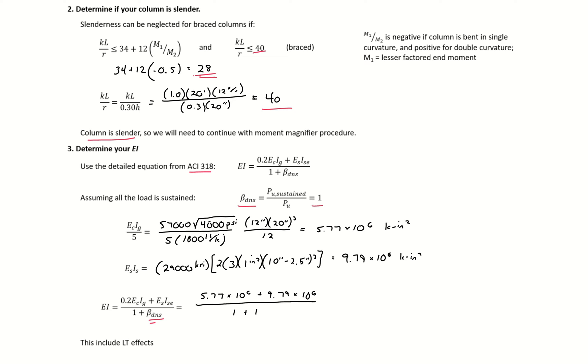This gives us EI equal to 7.8 times 10^6 kip-inches squared. Note that the beta_dns factor takes into account our long-term effects, so those are included in our calculation of EI.